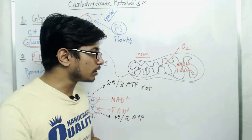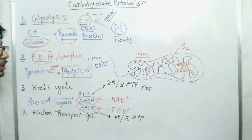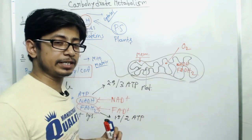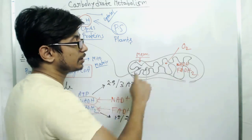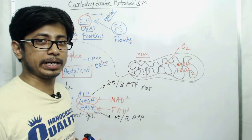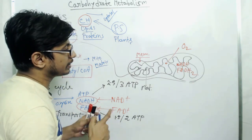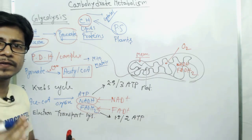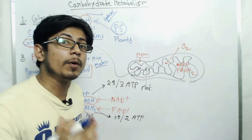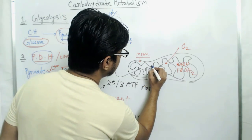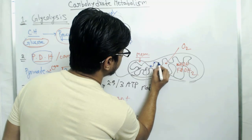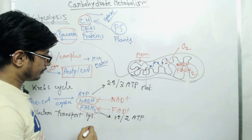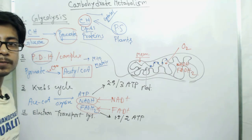The process of electron transport chain occurs in the mitochondria, and especially across the inner membrane of mitochondria. There are sequences of different enzyme complexes present in this inner membrane.